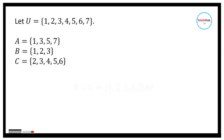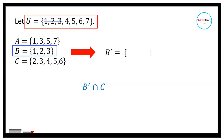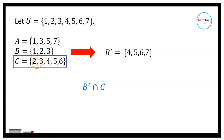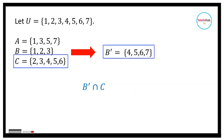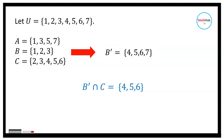Now for B prime intersection C: first, let's get B prime — the elements in the universal set not in B — so B prime is the set containing 4, 5, 6, and 7. C is the set containing 2, 3, 4, 5, and 6. For the intersection, we look for common members, so the intersection of B prime and C is 4, 5, and 6.